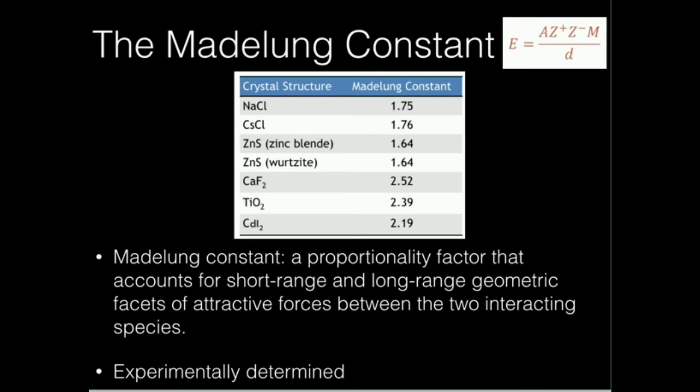All the Madelung constants are tabulated in tables. If you need to figure out what the Madelung constant is, you just figure out what crystal structure you have, and there's a Madelung constant that goes with that. For example, if we had a calcium fluoride crystal structure, we would use the Madelung constant 2.52. These are tabulated, and your instructor will probably provide them on the exam — they're experimentally determined. So if I want to take into account the attractive forces due to differences in geometry between the different interactions, I use the Madelung constant.